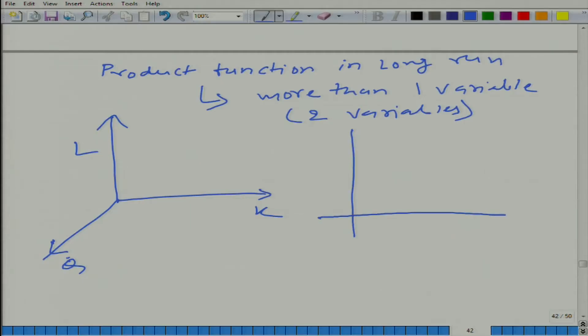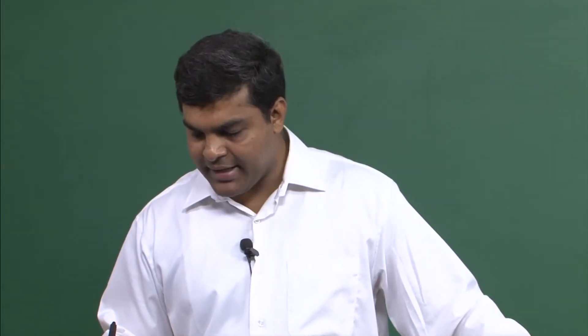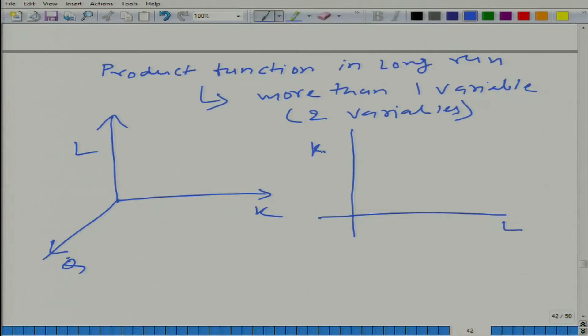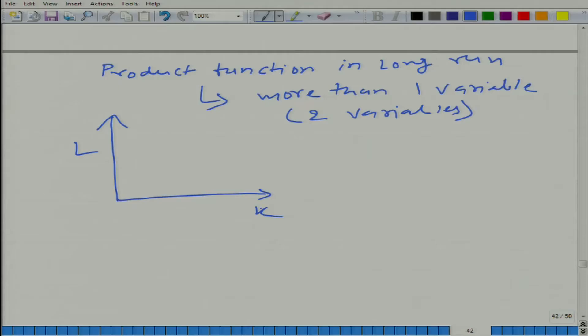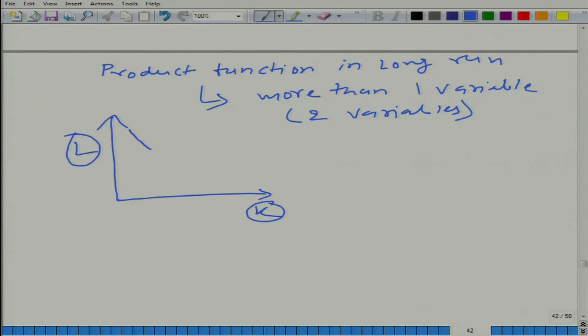So what do we do? We use isoquants to represent this production function. What we have here is L and K on the axes, and we get rid of the Q axis. We draw level curves for different output levels — we figure out the combination of K and L which would efficiently produce that particular level of output, and thus we get isoquants.